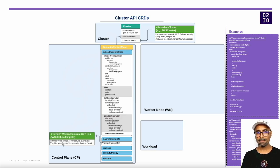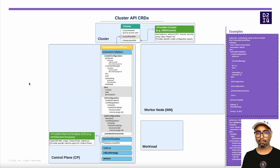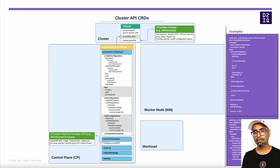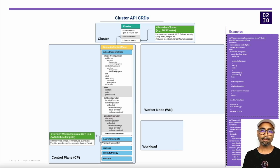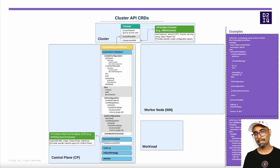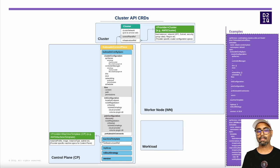The provider machine template defines specs like instance profile, image, instance type, subnet, etc., to form the specs of the virtual machine to be provisioned by the respective infrastructure. The fields of this template vary based on the provider and the name of the resource definition also depends on the provider. For example, AWS machine template and AWS machine for AWS; Azure machine template and Azure machine for Azure.